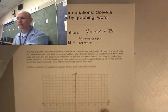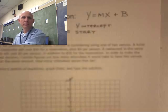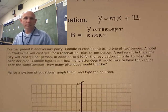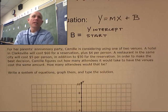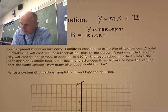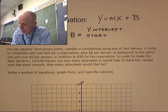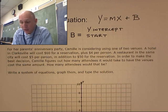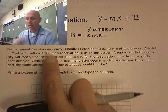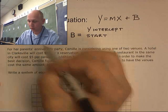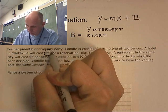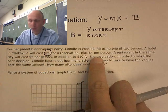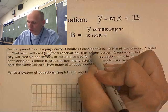This guy is going to be really messy, but we can do it. For her parents' anniversary party, Camille is considering using one of two venues. A hotel in Clarksville will cost $60 for a reservation, so there's her starting value. And $4 per person. There's her change.